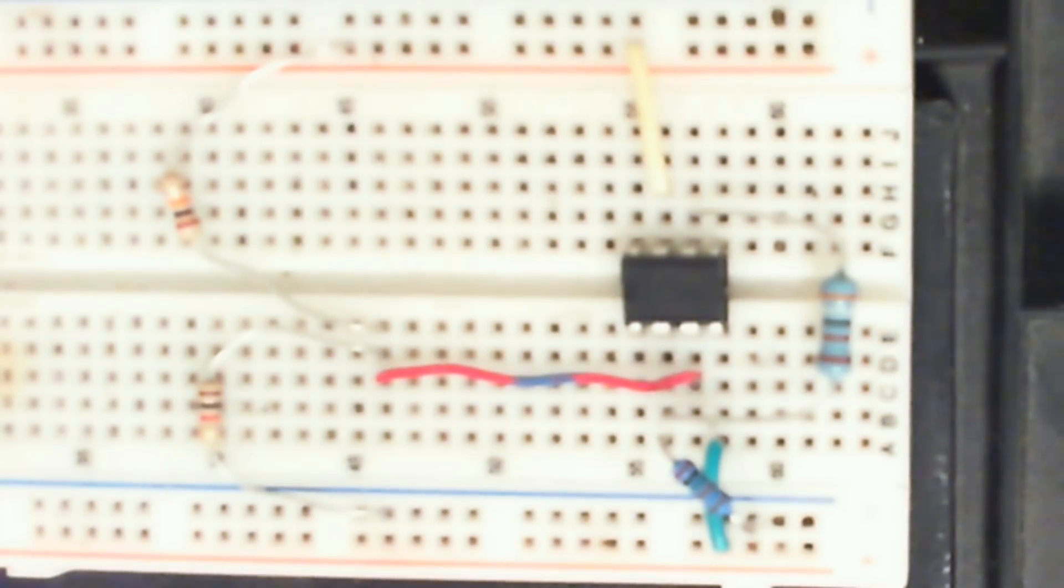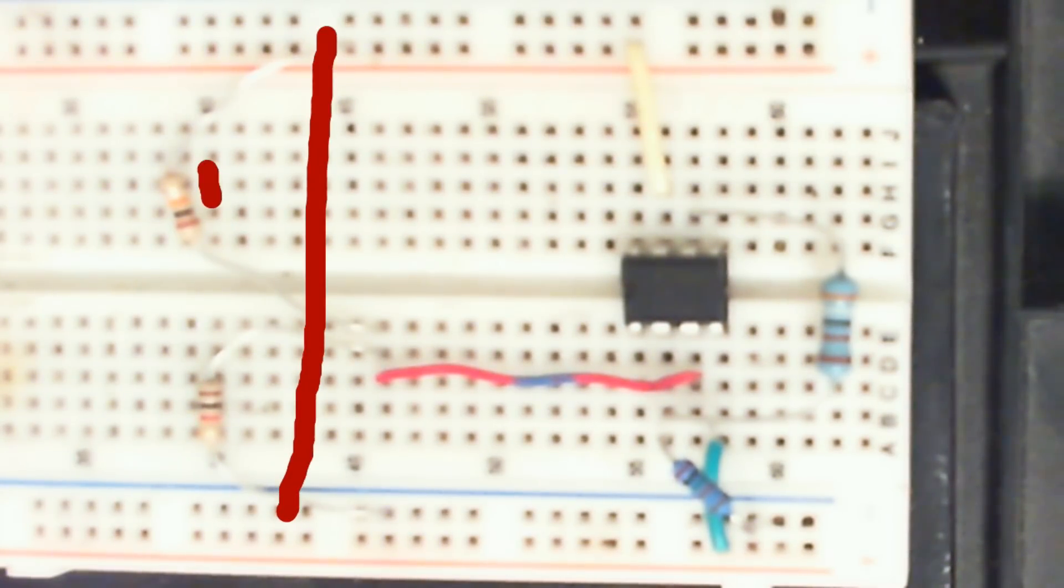It's very simple. This over here is my voltage divider. It's a 10k resistor there and a 1k resistor there.